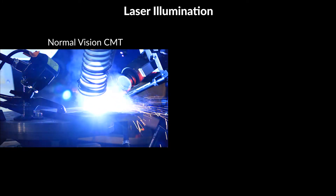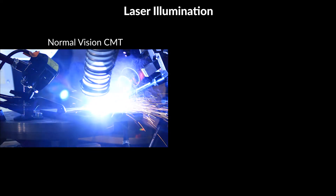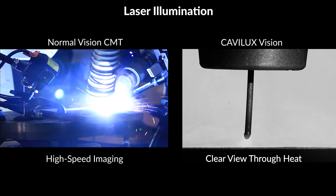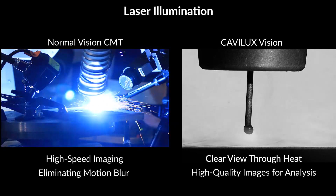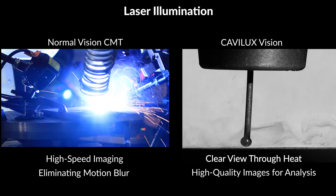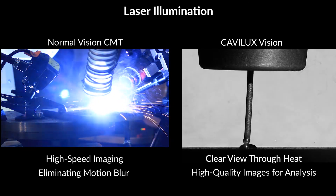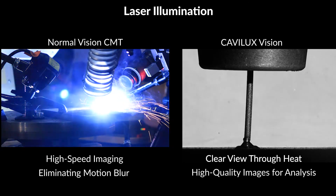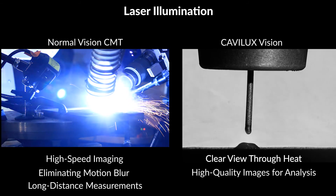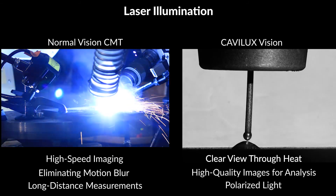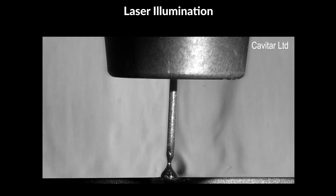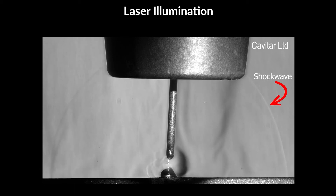Other benefits of laser illumination in the visualization of welding processes include: clear view through heat, possibility of high-speed imaging, eliminating motion blur, and high-quality images that enable simultaneous image analysis and live monitoring — for example, of dimension, shape, position, topography, and surface defects. Additional benefits include the possibility of measurements over long distances, use of polarized light (linear or circular), and for especially fast phenomena such as shock waves, laser illumination provides the possibility of using double pulses, which makes it possible to capture the expansion speed of the shock wave.